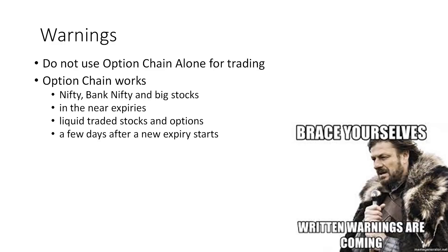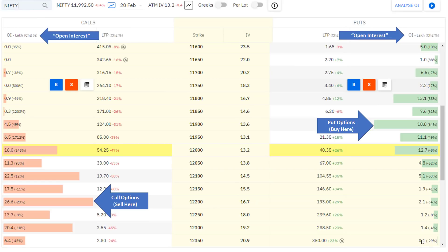Another important point: option chain needs time to mature. If a new expiry just started — say February expiry just opened on the 1st — the chain is very early and unreliable. For a weekly expiry, don't start looking at it on a Friday six days before; start from Monday. For monthly, give it six to seven days after the series begins before analyzing it.